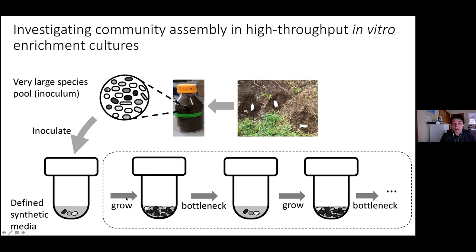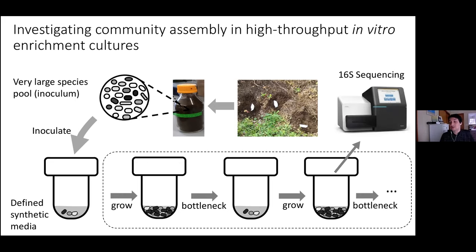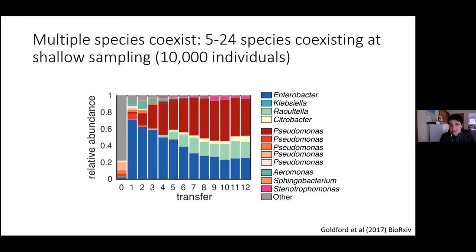At the end of each growth period we do community-level 16S sequencing to measure composition. As you've seen in this plot, after eight to nine transfers we find communities reach an equilibrium where community composition changes very little.